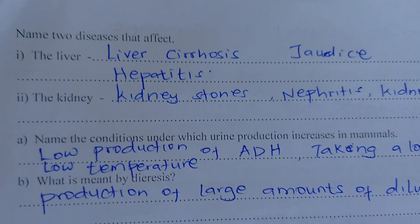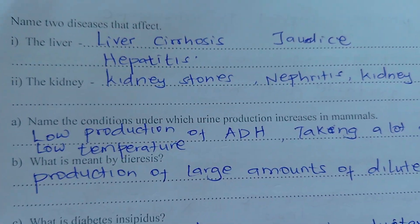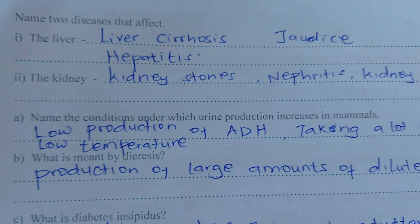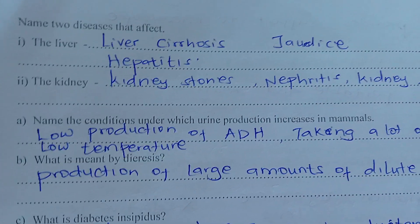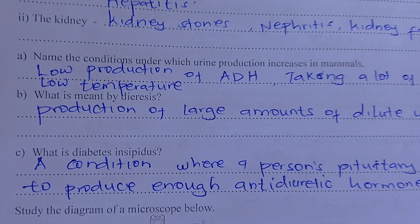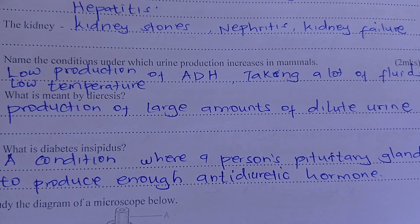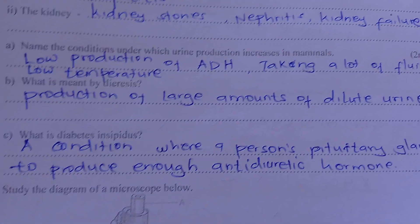Name two diseases that affect the liver: liver cirrhosis, jaundice, and hepatitis. For the kidneys: kidney stones, nephritis, and kidney failure.